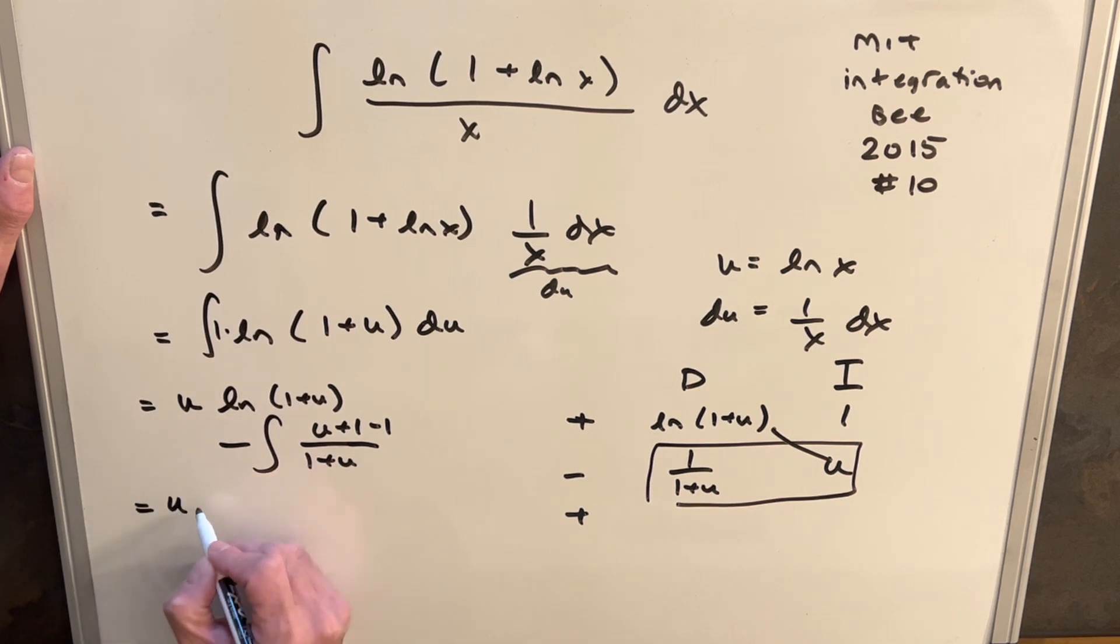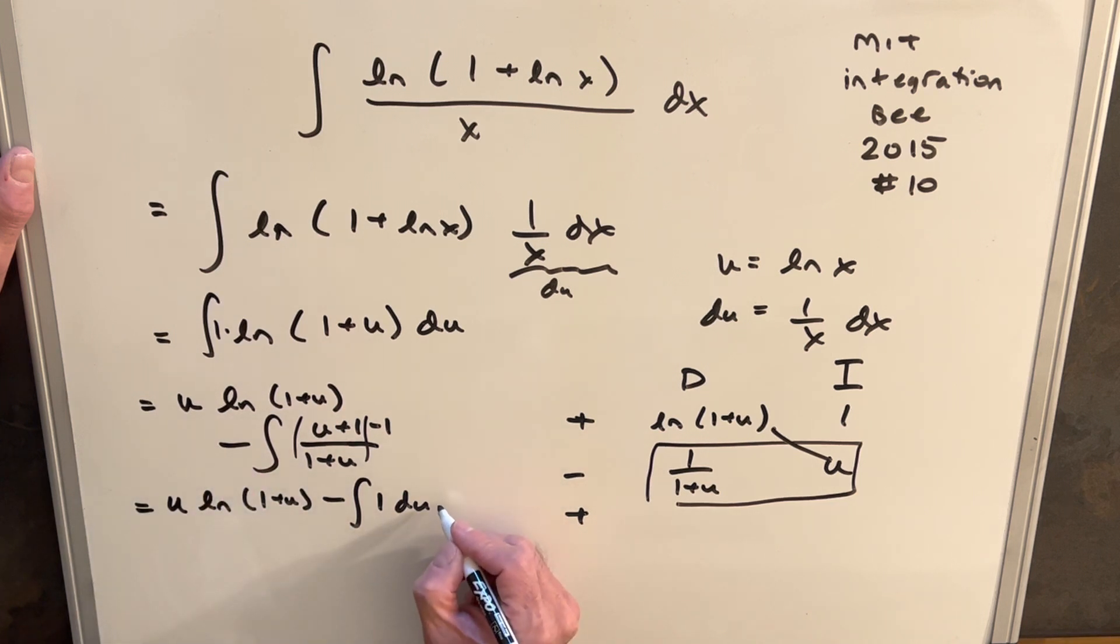So then we'll have our u, this part of our answer, u ln 1 plus u. And then notice, if we separate it out, this piece here is just going to be a 1. So we're going to have minus the integral of 1 du. Then this is a minus with a minus. So this last piece is going to be a plus 1 over 1 plus u du.